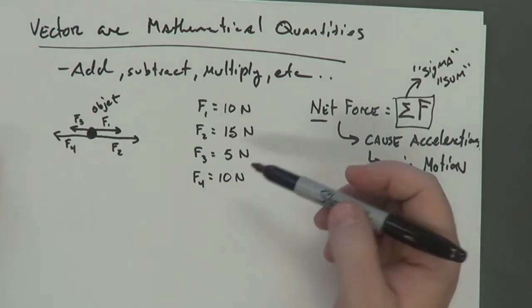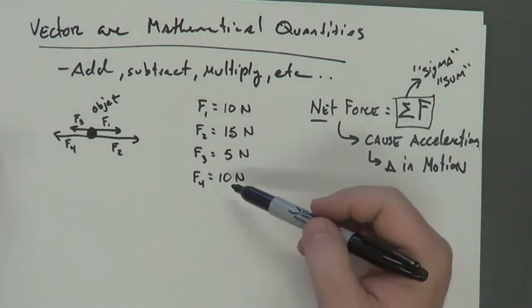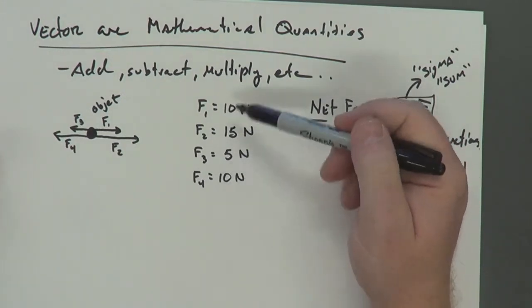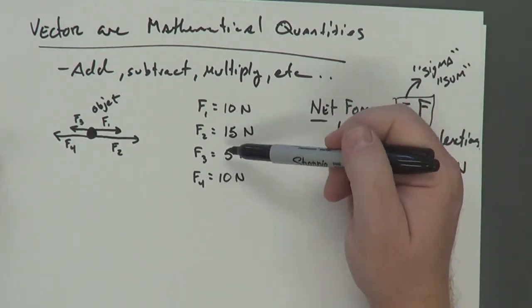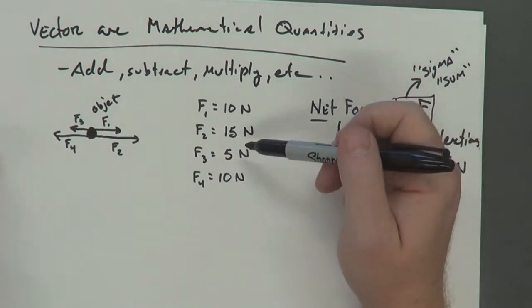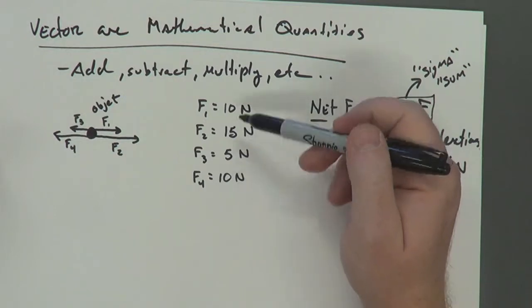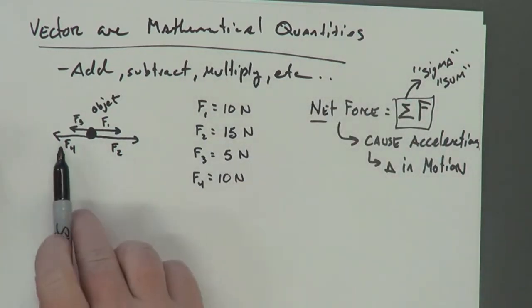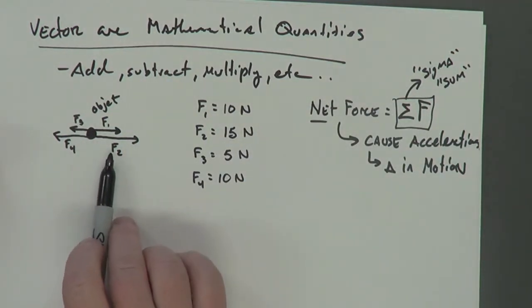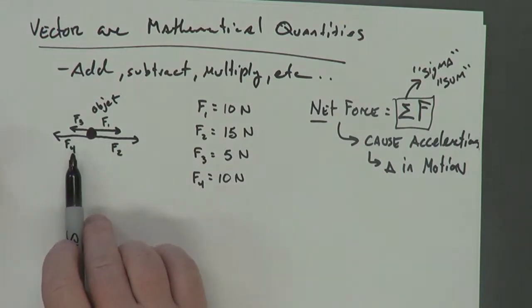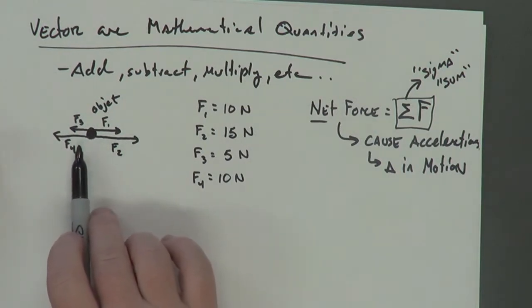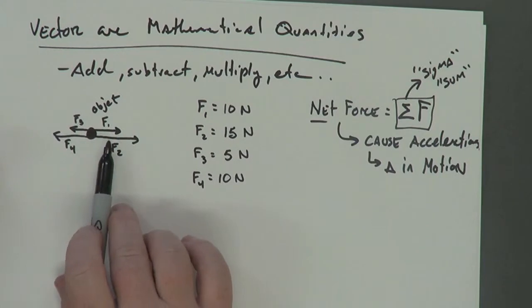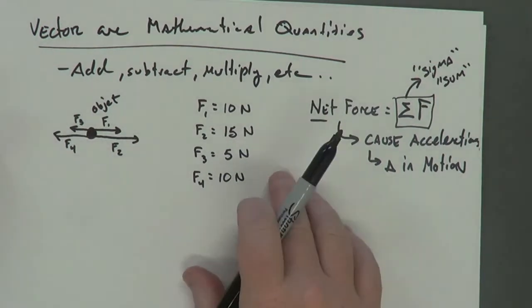So you immediately might say, well, okay, so sum means add. So let's add all of these up. And you would say 10 plus 15 plus 5 plus 10. And you would get an answer. Let's see, what's that? 25, 35, 40. And you would be incorrect. Because if you think about it, these are vectors. So in addition to the magnitude, what you also have to consider is that second component, which is the direction. So if I look at these, you can see that F1 and F2 are both pointing to the right. F3 and F4 are both pointing to the left. So mathematically, you can transition from an arrow to some other way of indicating a direction. Well, if these are opposites from each other, I could take one to be positive and the other to be negative. And then I'm actually accounting for the direction.